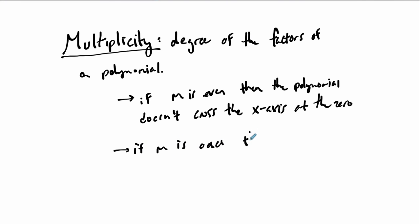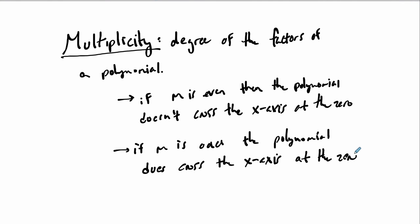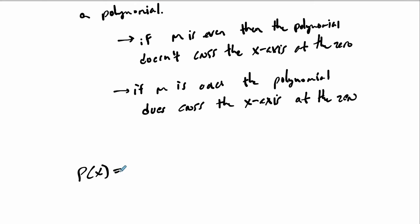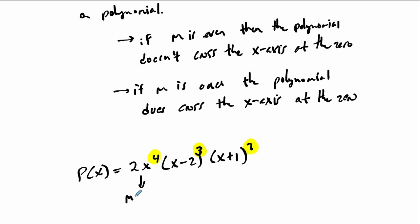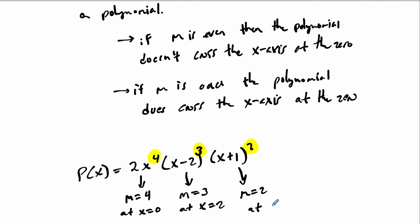Suppose you have some polynomial P(X) already factored: 2x⁴ times (x − 2)³ times (x + 1)². These are the degrees of the factors — the multiplicity values. At X = 0, M = 4 (even); at X = 2, M = 3 (odd); and at X = −1, M = 2 (even).